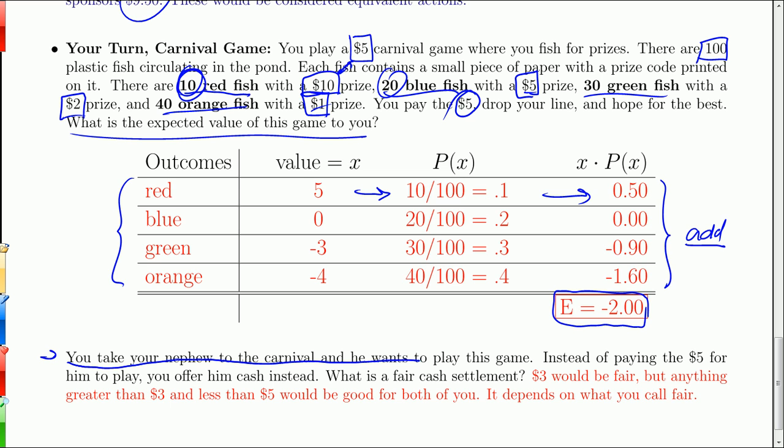Then I have this little extra question here for you. You take your nephew to the carnival and he wants to play this game. Instead of paying the $5 for him to play, you offer him a cash buyout. Why don't you just take the cash and we don't play at all. What is a fair cash settlement? Well, the totally fair thing to do would be to give your nephew $3, because that's what you expect to lose. You start with $5 and you get $2 back. So it's a $3 investment. So you just give him $3. He has a guaranteed $3.